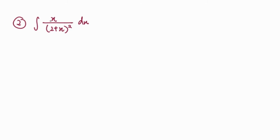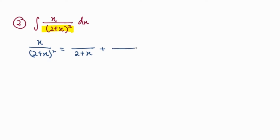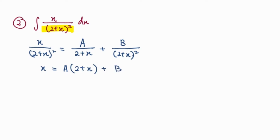Next, we integrate x over (2+x)² dx. Notice that this denominator has a repeating factor. So for the partial fraction: the first factor is (2+x) and the second partial fraction repeats this factor squared. Both are linear factors, so the numerators are constants A and B. Equating numerators: x equals A times (2+x) plus B. For B, no extra multiplication is needed since (2+x)² matches the denominator.